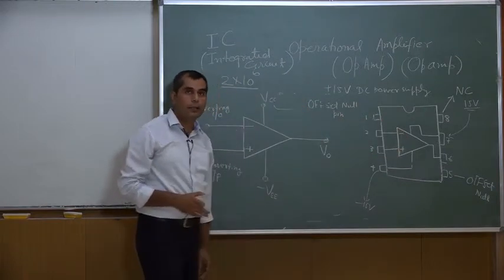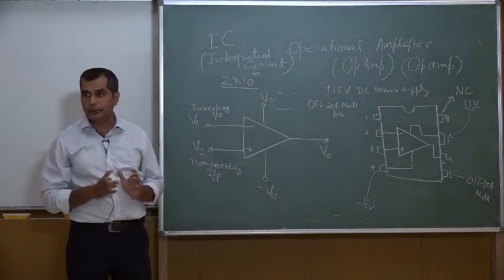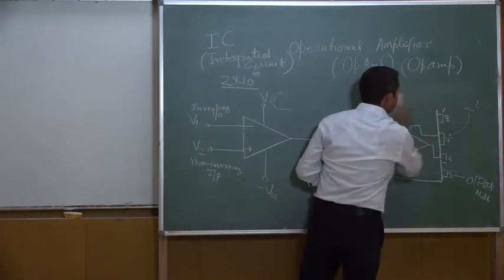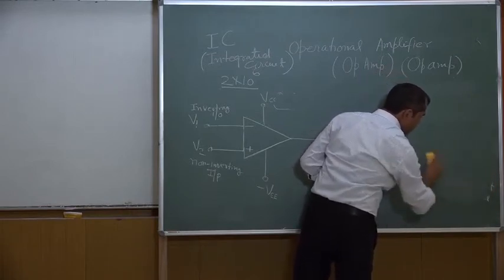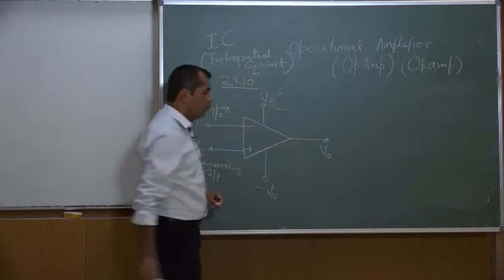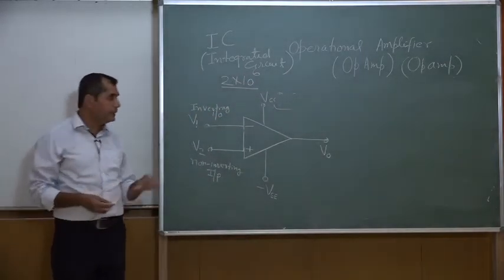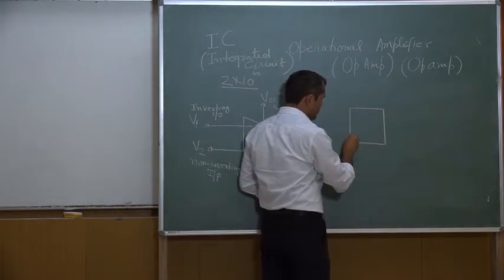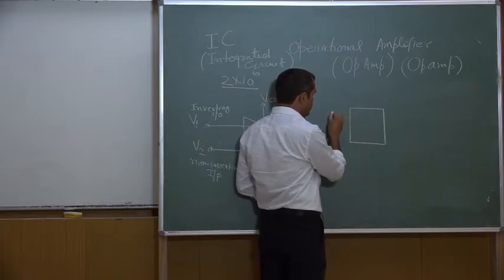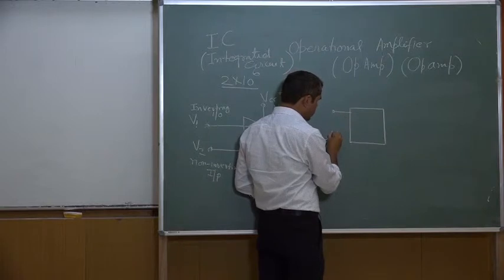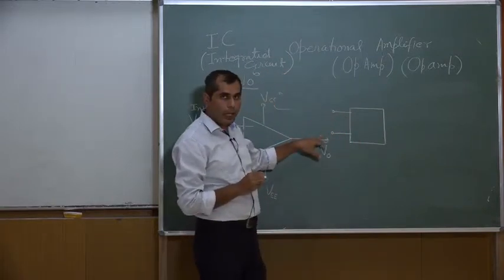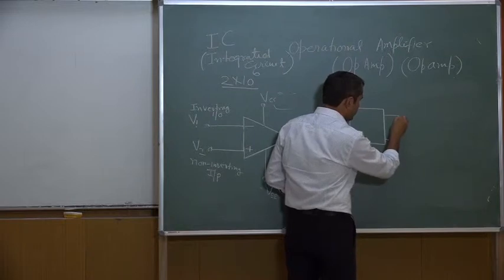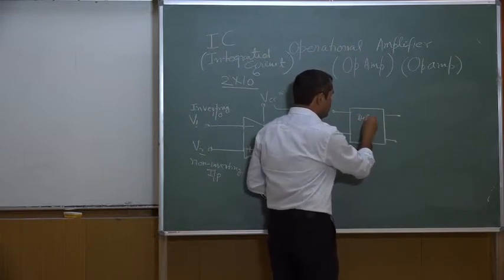Now let me give the block diagram of what is inside this integrated circuit operational amplifier. As I mentioned, it is a multistage amplifier — there are four different important stages inside. The first stage is a differential amplifier, which receives input between the two input terminals and produces differential output.